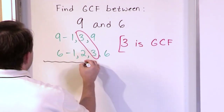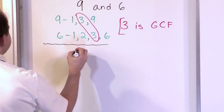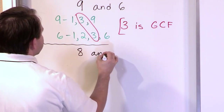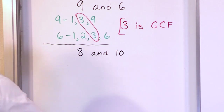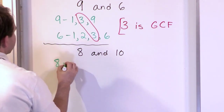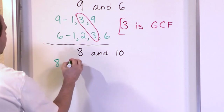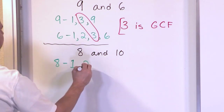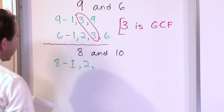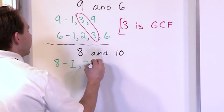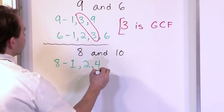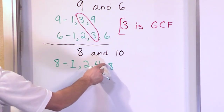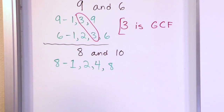Let's find the greatest common factor between the numbers 8 and 10. We look at the factors of both numbers and pick the largest one that's common to both. For the number 8, we list the factors: 1 is always a factor, 2 is a factor because it will divide into 8, 3 is not a factor, but 4 is a factor. 5, 6, and 7 are not factors because they can't be divided into 8. But 8 is a factor.